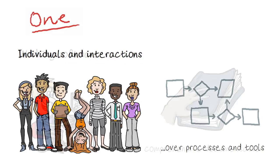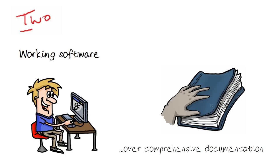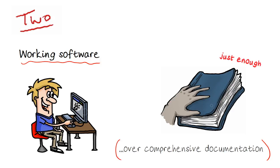The second value is that we prioritize working software over and above comprehensive documentation. Because traditionally, we would see heaps and heaps of documentation being produced before the product was released for testing. But here we're saying that working software is much more important. At the end of the iteration, we need just enough documentation and software that actually works.